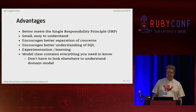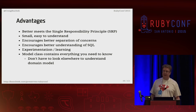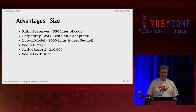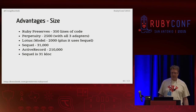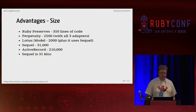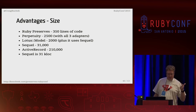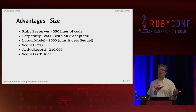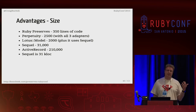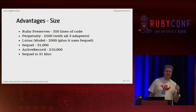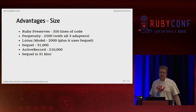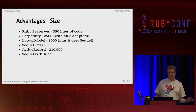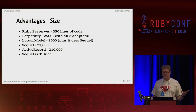Ruby Preserves has some advantages: it's small, it has a simple API that makes it easy to use, it's easy to understand the whole thing, it's 350 lines, and it encourages good engineering practices. Compared to other ORMs: Perpetuity is 2,500 lines, Lotus Model is 2,000 lines plus it uses Sequel at 31,000 lines, and ActiveRecord is 210,000 lines — about 210,000 out of 270,000 lines total of Rails. Of my 350 lines, 100 are actually just the word 'end', because I refactor mercilessly. Most of my methods are one line, because smaller methods with good names show intent and make the code easier to read.